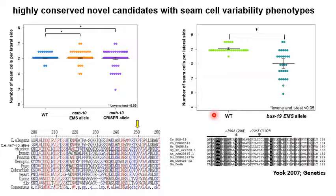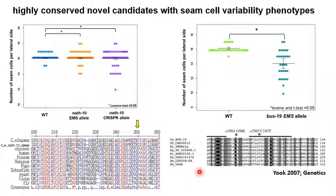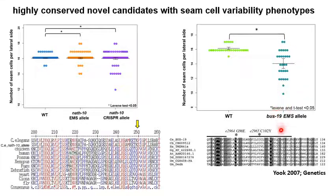The second candidate we identified was BUS19. BUS19 is an ancient transmembrane protein that is also highly conserved — all the way up to humans as TMN41A. We found that when a premature stop codon was introduced into the BUS19 locus, there was a significant decrease in the number of seam cells as well as a greater spread of terminal seam cell numbers, indicating a greater level of variability. These two genes are good examples of mutations that affect seam cell phenotypic robustness, and their conservation suggests that any mechanisms we uncover might be applicable to other systems.